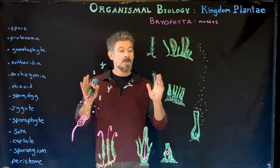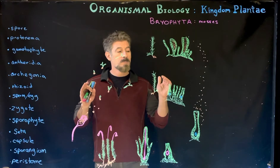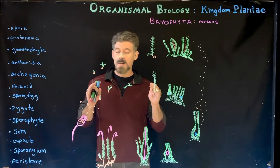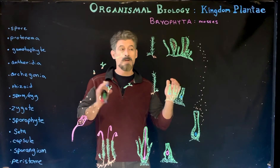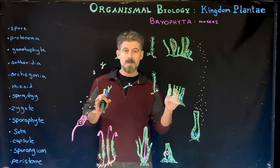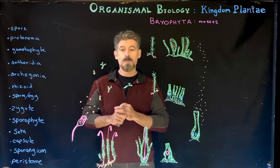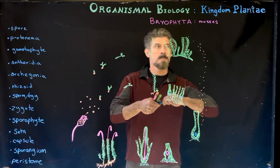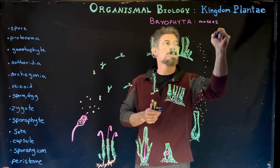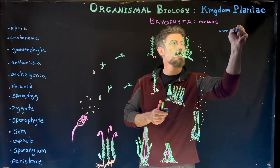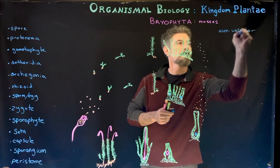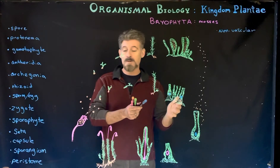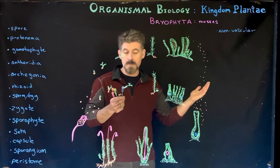We're going to start looking at different groups of plants. The first thing we'll do is go through life cycles for each of the groups — some things they share in common and some things that are unique. We'll begin with the bryophytes, which are the non-vascular plants, and particularly the mosses. We'll introduce terms, some unique to these groups and some that carry over into other groups.